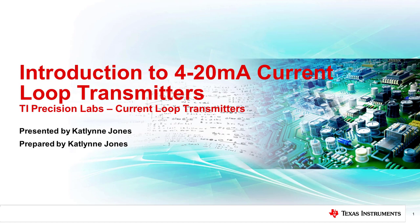Future videos in this series will discuss the different wiring configurations of current loop transmitters, specifically two-wire and three-wire, discuss design considerations of each configuration, and introduce the integrated solutions that TI offers. The integrated solutions we will cover have a number of on-chip features that will provide you a simpler design process and a high level of precision. At the end of this series you will have a better understanding of how to use TI's two-wire and three-wire current loop transmitters in your design.